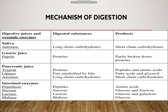Complete digestion takes place in the small intestine with the help of enzymes secreted by the intestinal glands. Intestinal glands secrete intestinal juice, which contains enzymes. Peptidases of the intestinal juice digest peptides into amino acids. Disaccharidases digest disaccharides into monosaccharides. For example, sucrase digests sucrose into glucose and fructose, lactase digests lactose into glucose and galactose, and maltase digests maltose into glucose.